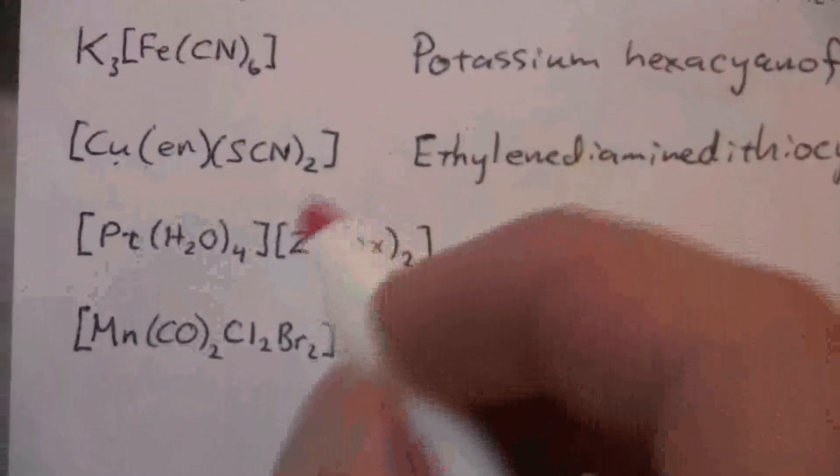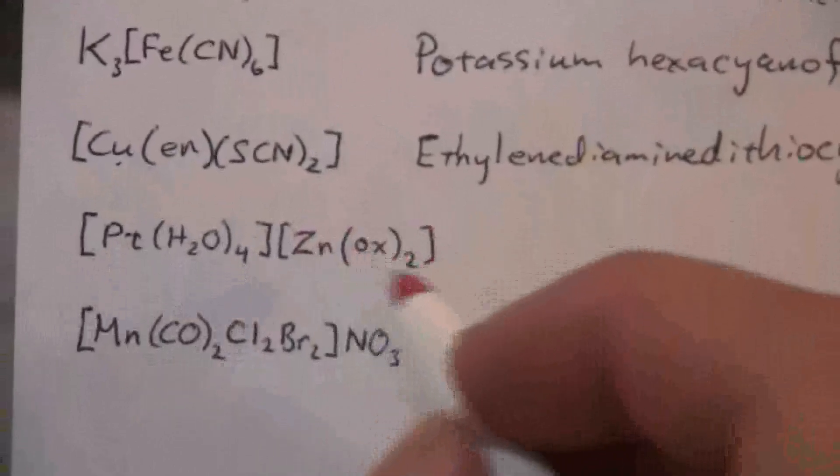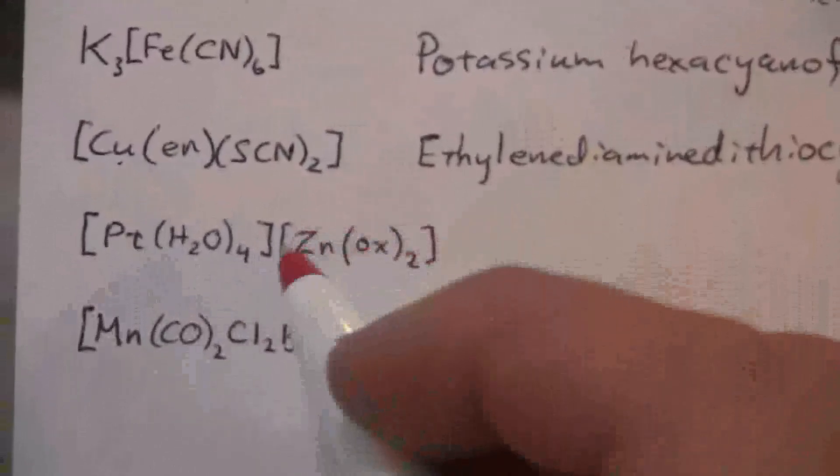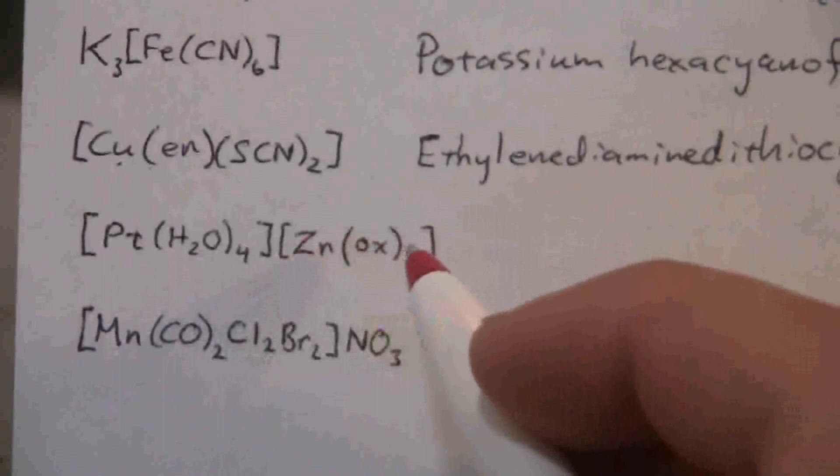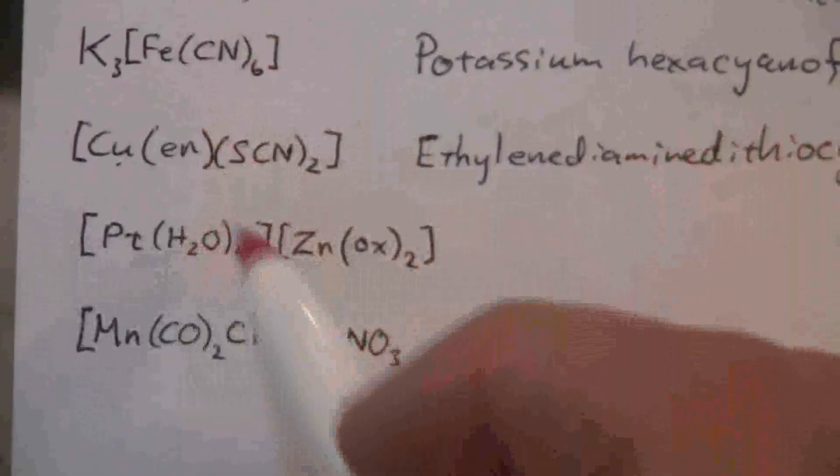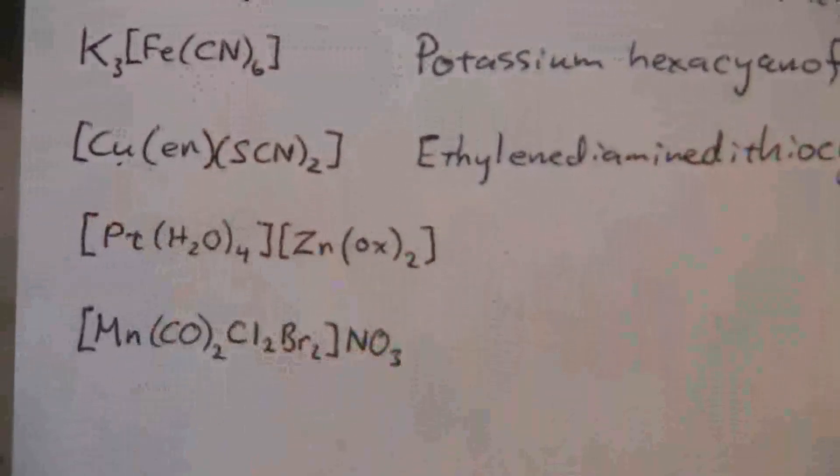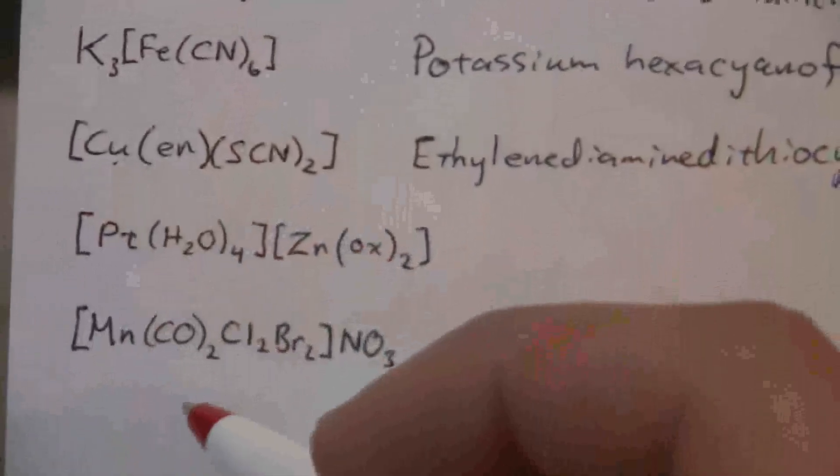So we can use that and say, well, then plus two and then minus four from those and this will be negative two altogether. The water is neutral. So that means the platinum must be a positive two.